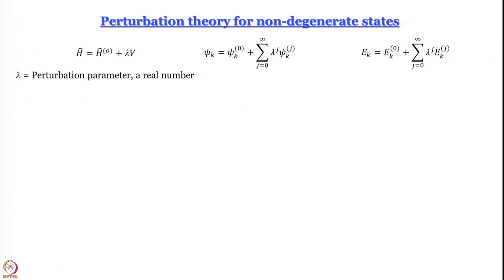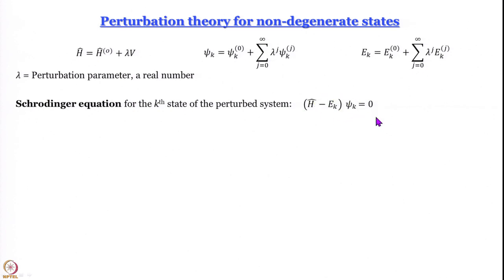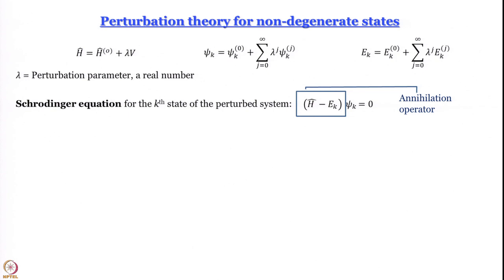Now we write the Schrödinger equation for the kth state of the perturbed system: H-psi equals E-psi, or equivalently (H-hat minus E_k) operating on psi_k equals zero. When an operator operates on a function to produce zero, it has annihilated the function — this kind of operator is called an annihilation operator. Annihilation operators are used in quantum mechanics quite frequently to simplify complex problems.